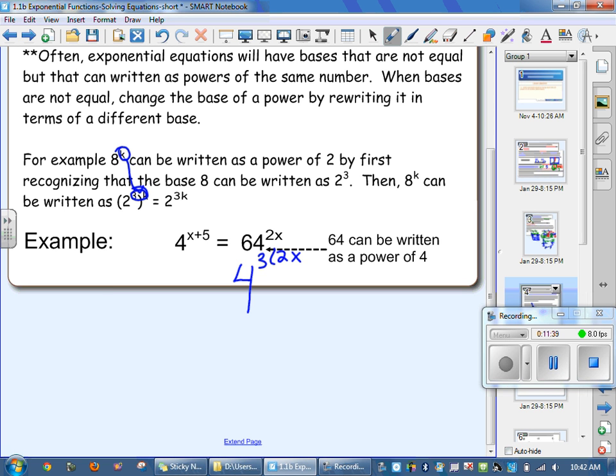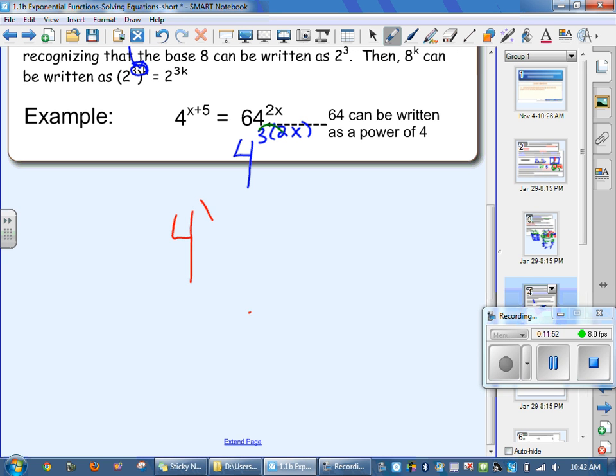So when I times it over, 3 times 2x is how big? 6x. So now your equation, you can write it this way. You're going to have 4 to the x plus 5 on the left equaling 4 to the 6x on the right. Now we're back to where the bases are the same and you can drop your base.